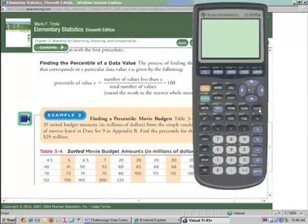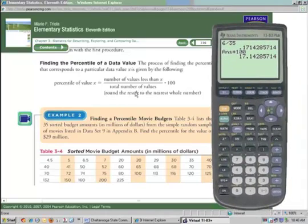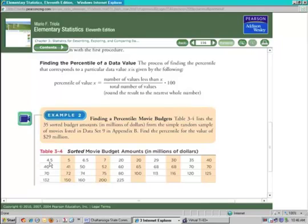And let's get out of this. So, if I do 6 divided by 35, I can convert that to a decimal. And then multiply by 100, which all that does is move the decimal over two places. Now, I want you to notice what it says right here. Round the result to the nearest whole number. So, if we actually work this problem, we get a 17%. So, what that's saying is 17% of the movie budgets are less than $29 million.